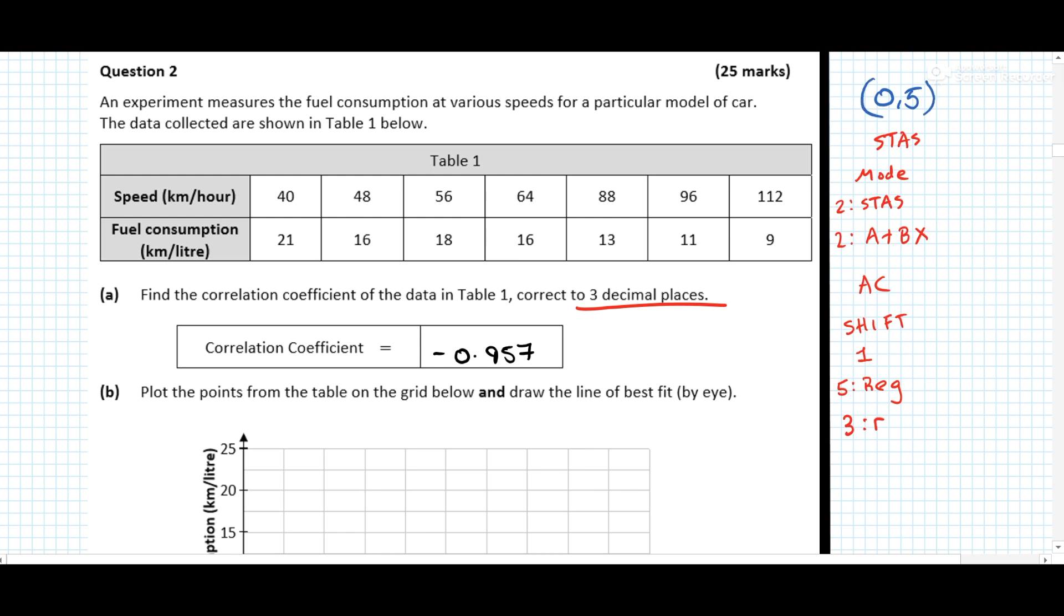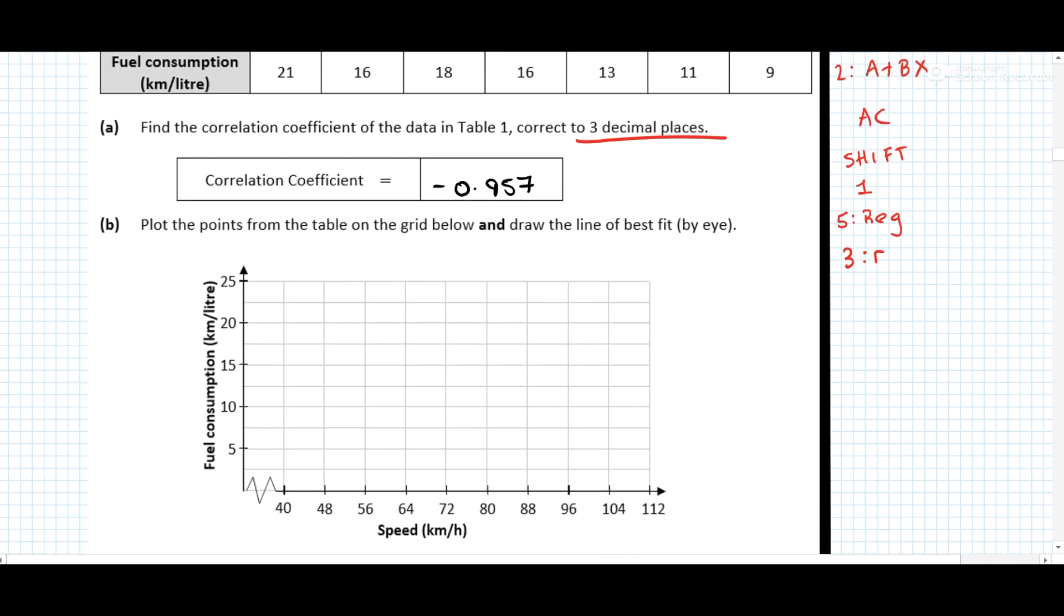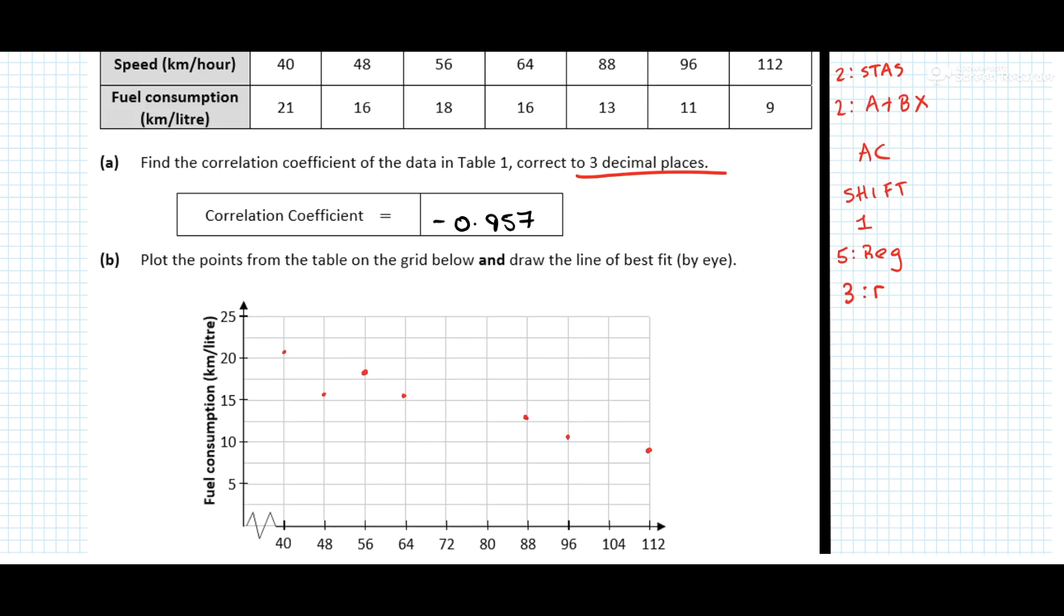Plot the points from the table on the grid below and draw the line of best fit by eye. So you do not need to go and find the equation of the line of best fit and go big massive rigmarole about it. So just do it by eye. So I'm going to quickly just put the points in because I think everyone will be able to do that. So although it's a really easy question, don't rush it. Because if you make one mistake, you're going to be in trouble. So really don't rush it. Make sure you guarantee yourself the marks.